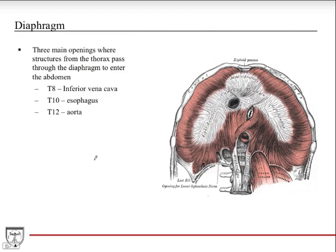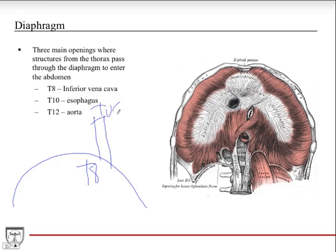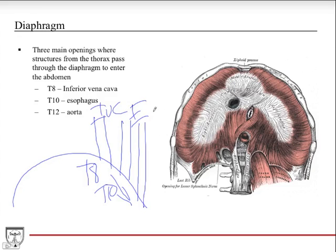The diaphragm has three main openings where structures from the thorax pass into the abdomen. Think of the diaphragm as dome-shaped. The IVC passes at the T8 vertebral level. Going down the slope, the esophagus is next at T10. And then the aorta, just lateral to the esophagus, passes at T12. A useful mnemonic: remember T8 for IVC, then just go by twos — T8, T10 for esophagus, T12 for aorta.